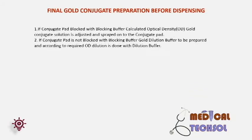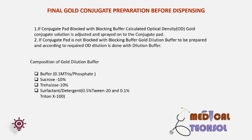Final gold conjugate preparation before dispensing: If the conjugate pad is blocked with blocking buffer, calculate the optical density (OD) and the gold dilution to be prepared. According to the required OD, dilution is done with the dilution buffer, and dipping or spraying is performed. Composition of gold dilution buffer: 1. Buffer — for example, 0.1 molar tris-phosphate or borate. 2. Sucrose 10%. 3. Trehalose 10%. 4. Surfactant or detergent such as 0.5% Tween 20.